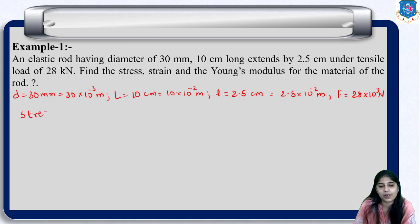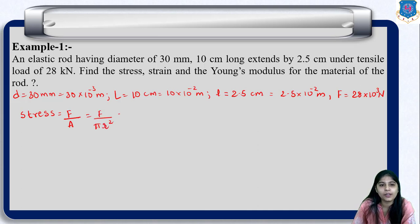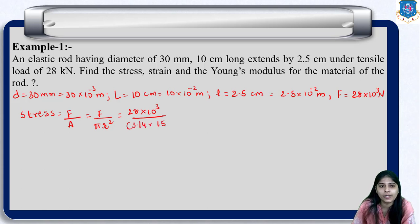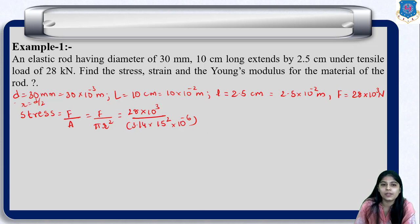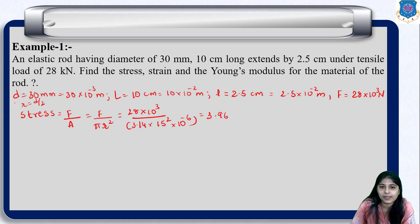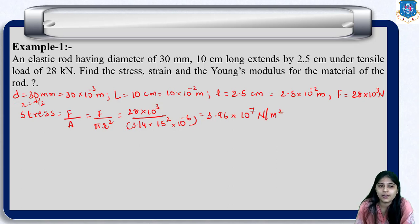First of all we need to find stress. Stress is nothing but force upon area, so F upon πr². Substituting the value of force: 28×10³ divided by 3.14×(15)²×10⁻⁶. Here D is given as 30 mm, so radius r equals D/2, which is 15 mm. This gives 3.96×10⁷ newton per meter square. So this is how stress is calculated.